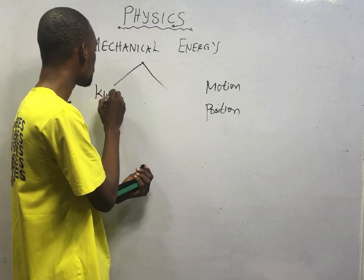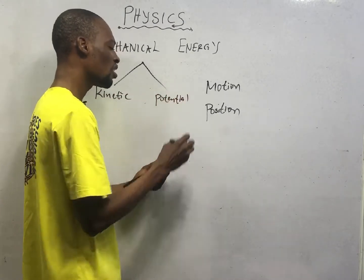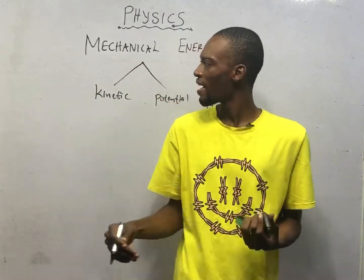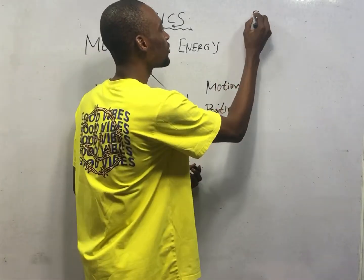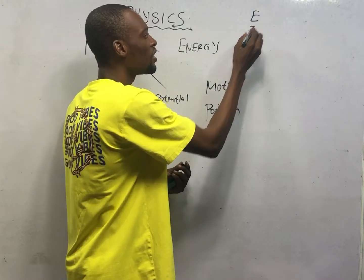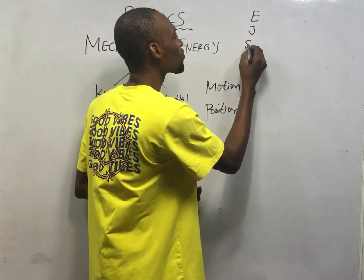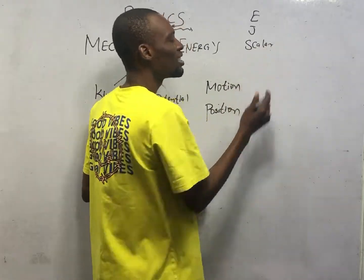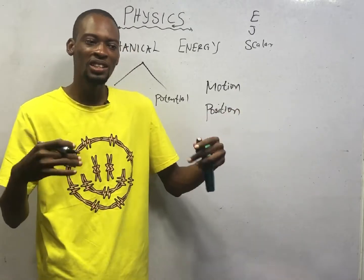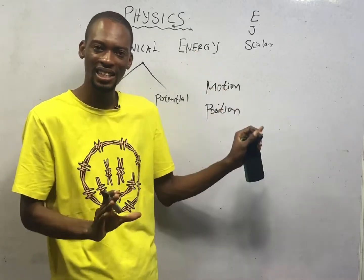We have kinetic energy and potential energy. While discussing energy, there are things you must know. Energy is denoted by E and it is measured in joules. The unit of energy is joules. Energy is a scalar quantity. Scalar quantities are quantities that have magnitude but no direction — they simply have a number, they don't have direction. So energy itself is scalar.